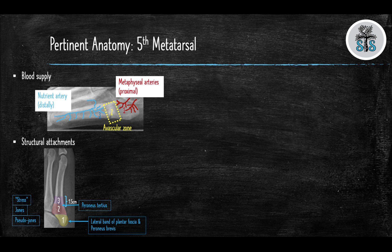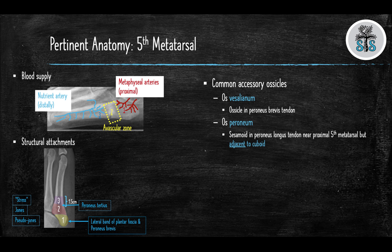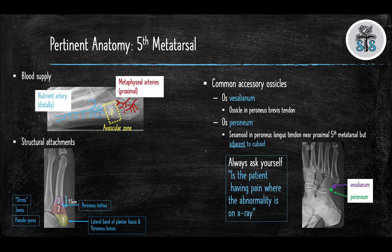There are two main accessory ossicles in close proximity to the 5th metatarsal that can be easily confused with a fracture. An ossicle is a very small bone. The os vesalianum is an ossicle in the peroneal brevis tendon, and the os peroneum is a sesamoid in the peroneal longus, near the proximal 5th metatarsal but adjacent to the cuboid bone.